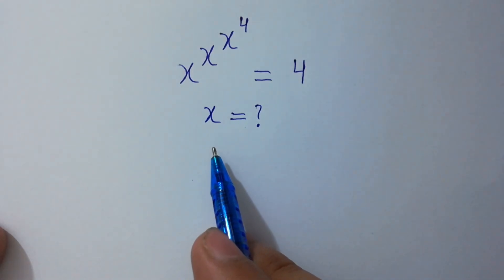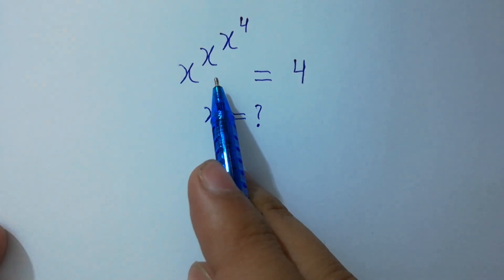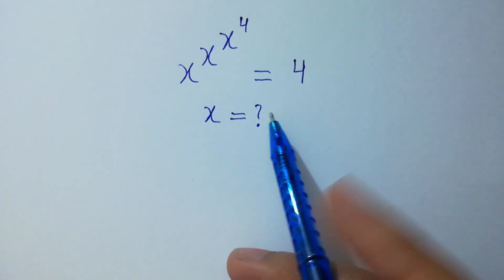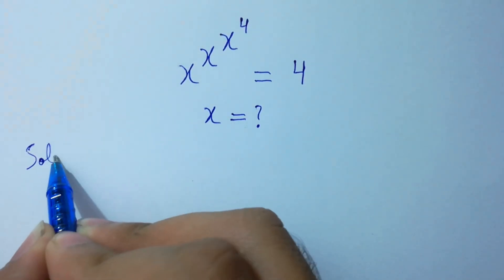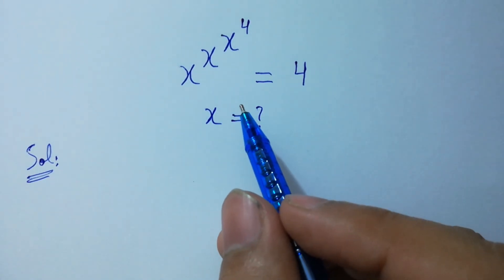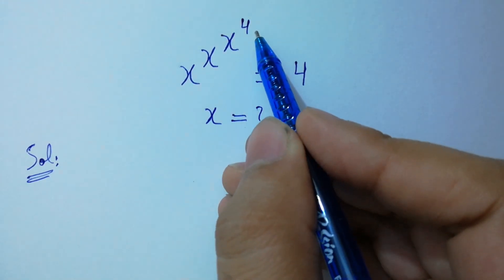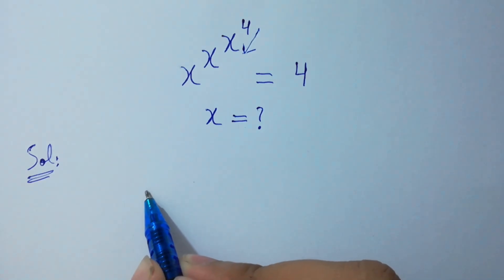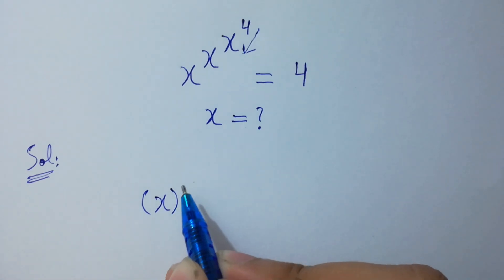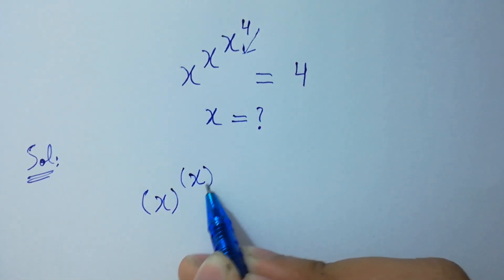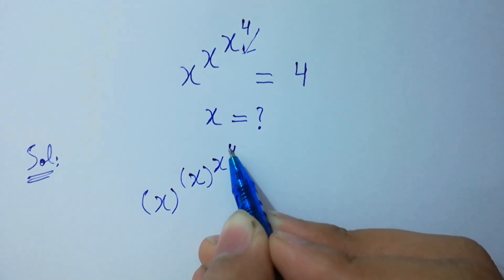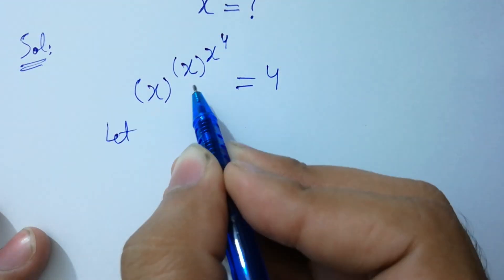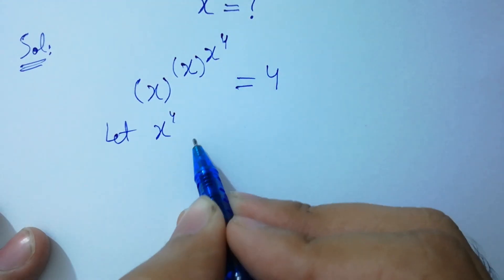Hello friends. Find the value of x if x to the power x, x to the power x, x to the power 4 equals 4. Let's solve it. Apply the right-to-left rule: we move from x to the power 4, bracket x to the power bracket x to the power x to the power 4, equal to 4. Let x to the power 4 equal to y.